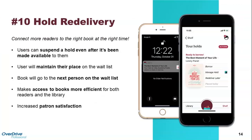Number ten: Hold Re-delivery. This is something we just released. It gives users the ability to connect more readers to the right book at the right time. With hold re-delivery, users can suspend a hold even after it's been made available to them — say they already have too many titles checked out. They can suspend the hold for seven days, maintain their place on the wait list, and the title will be delivered to the next person. This increases efficiency and patron satisfaction. It's a feature libraries have requested for a long time.